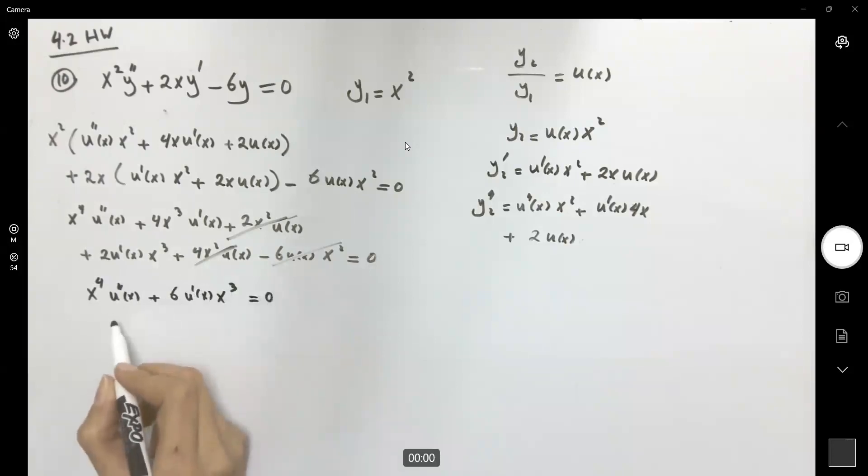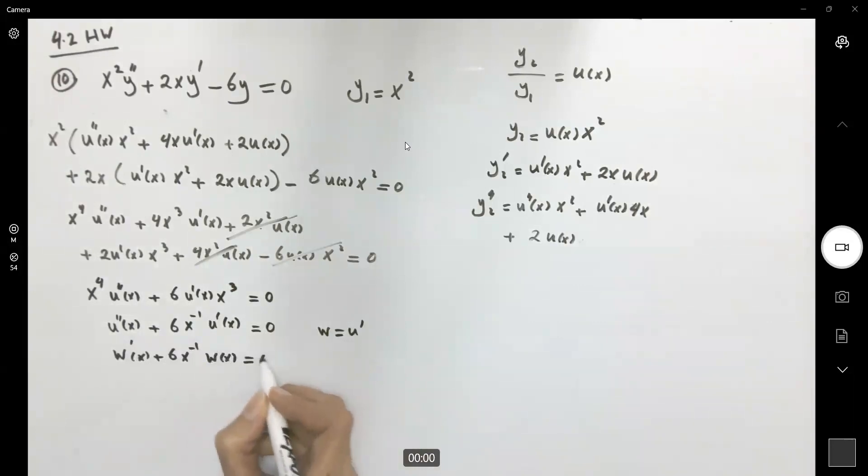So as you can see, here we're dealing with the second derivative of u, plus 6x to the negative one, and u prime of x equal to zero, which is a linear differential equation of first order, if you do the substitution, w equals to u prime. Very well. So w prime plus 6x to the negative one, w is zero.